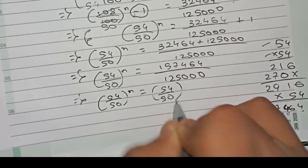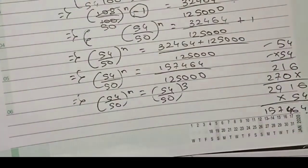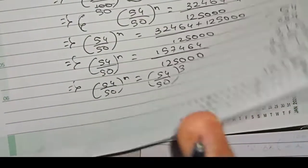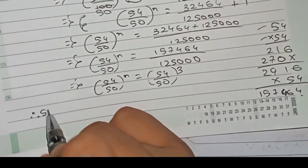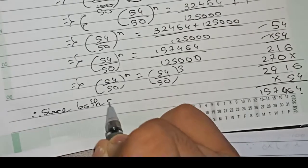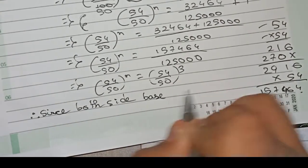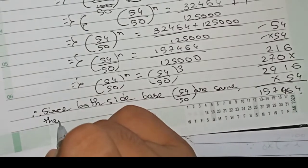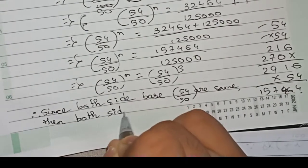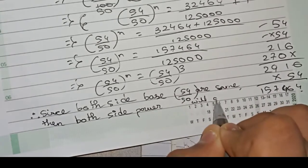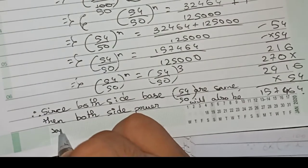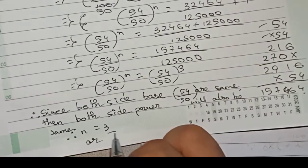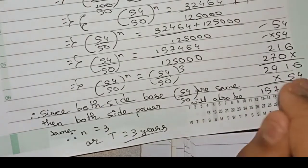Since both sides have the same base, that is 54/50, both side powers will also be the same. Therefore n = 3 years, so the time t = 3 years. This is our final answer for this question. Thanks for watching this video, please subscribe to my channel for more solutions.